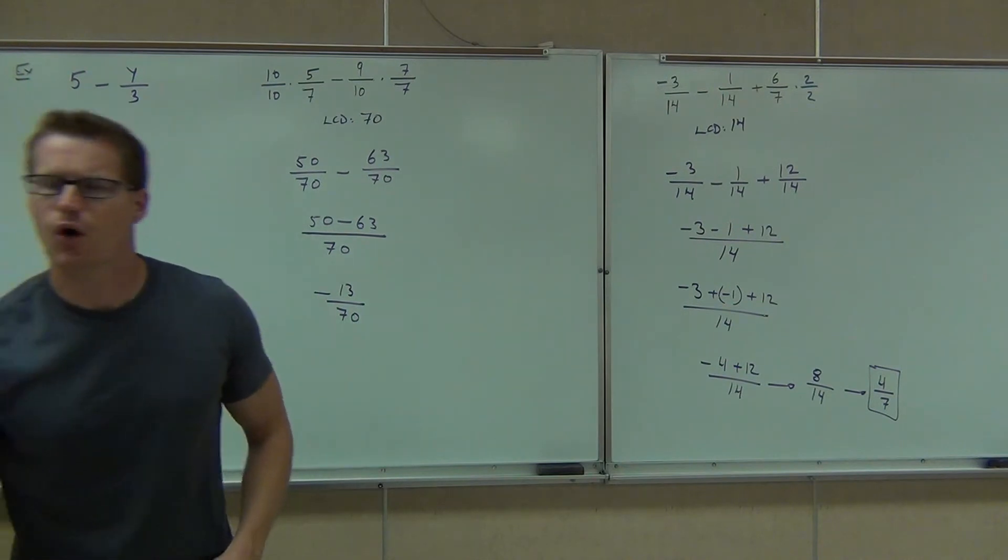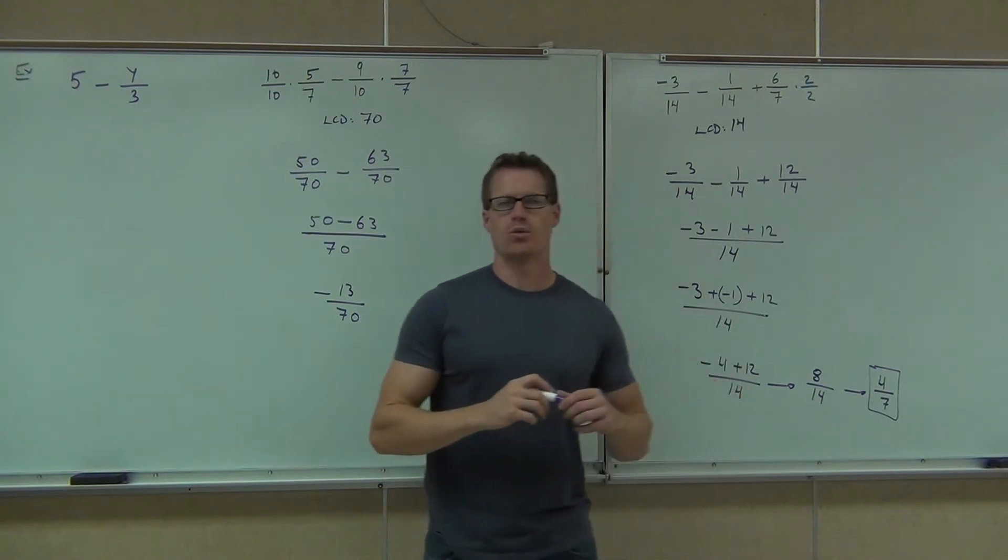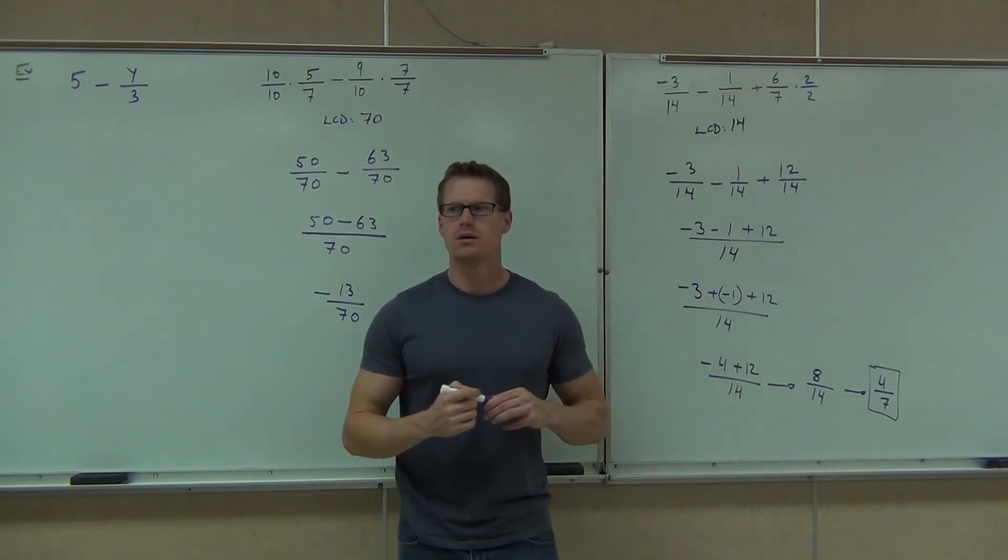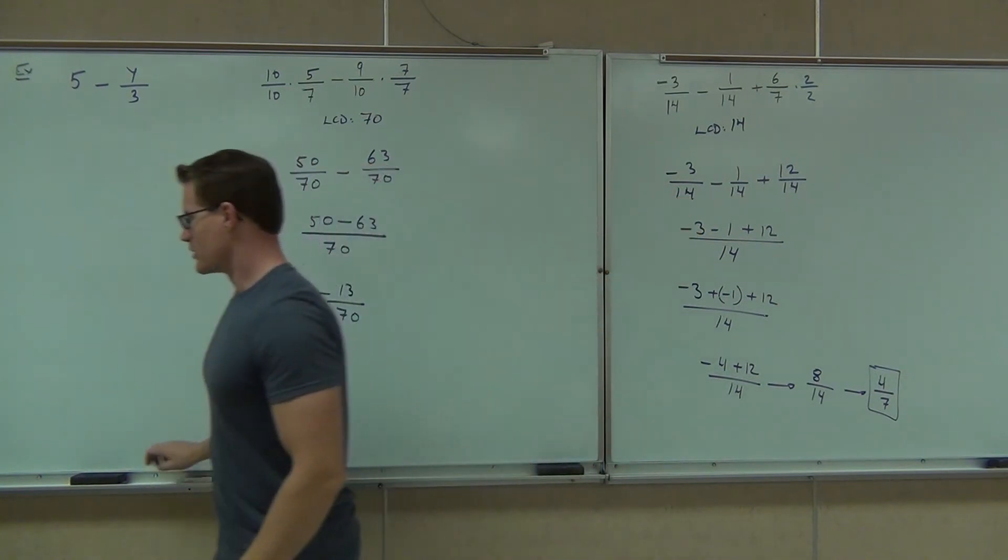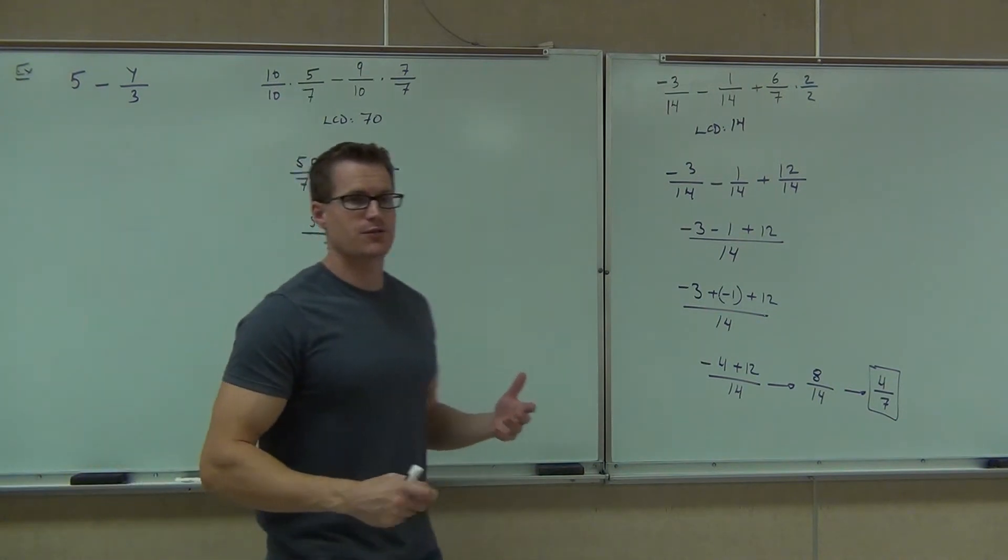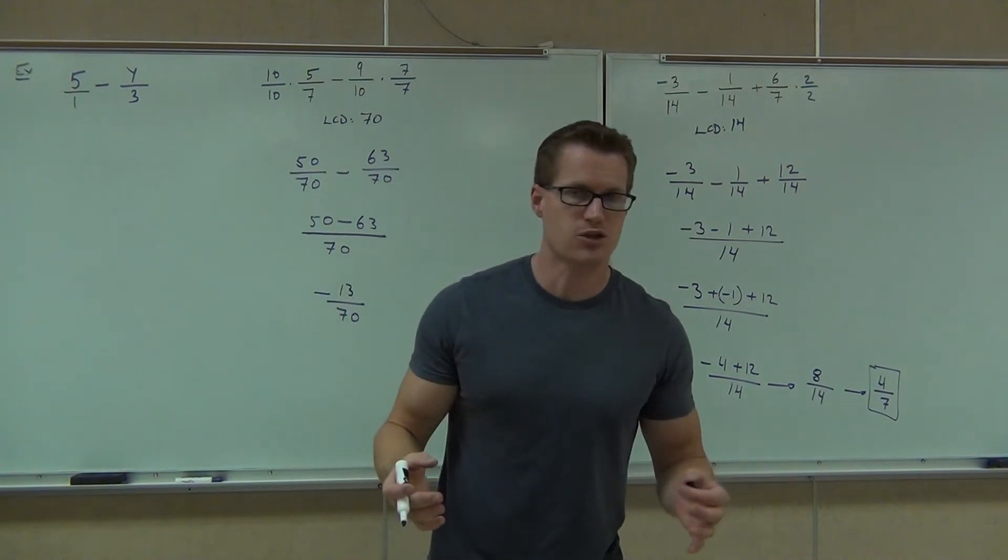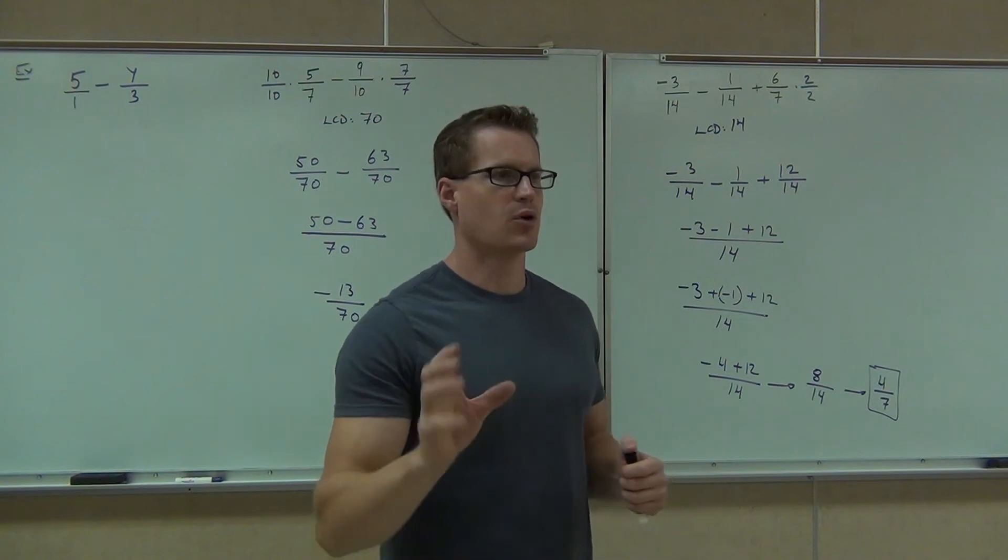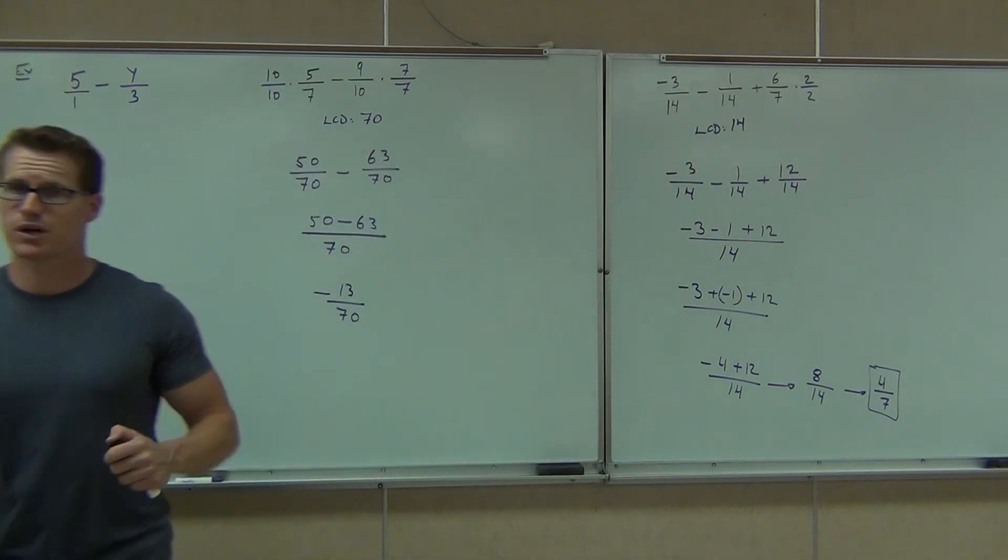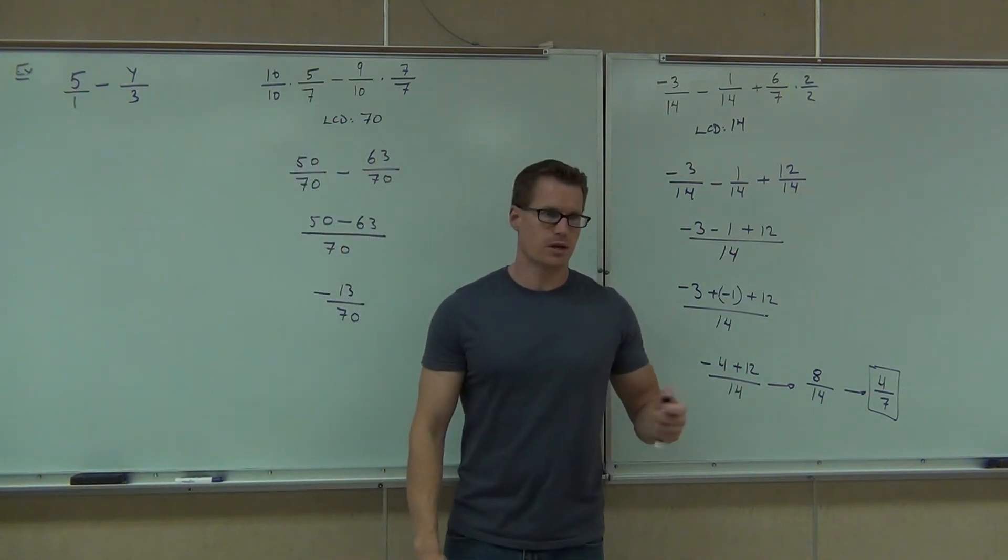What do you do if you're asked to subtract a whole number minus a fraction? Can you do it? Change it to a fraction. Change it to a fraction by putting a 1 over 1. We know that 5 is the same thing as 5 divided by 1. So we could do 5 over 1. Can you find the LCD between 1 and 3? 3. So LCD is 3.